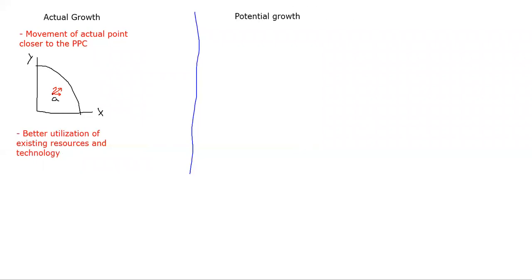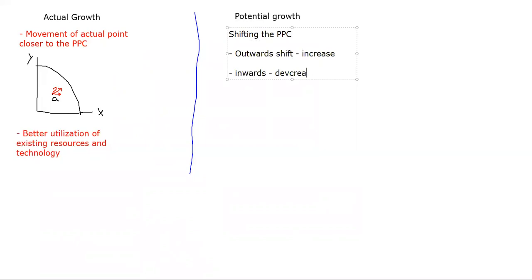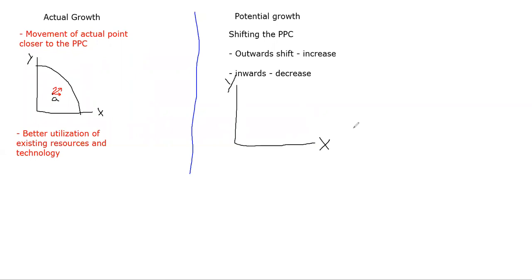Potential growth involves shifting the PPC itself. An outward shift means an increase in potential; inward means a decrease. An increase in potential means the given set of resources and technology has increased, so previously unattainable points may now become attainable - the productive potential of your economy has increased. You can possibly achieve or produce more. That doesn't mean you're actually going to produce more - for that you need actual growth. Potential growth just shows what you possibly could do.